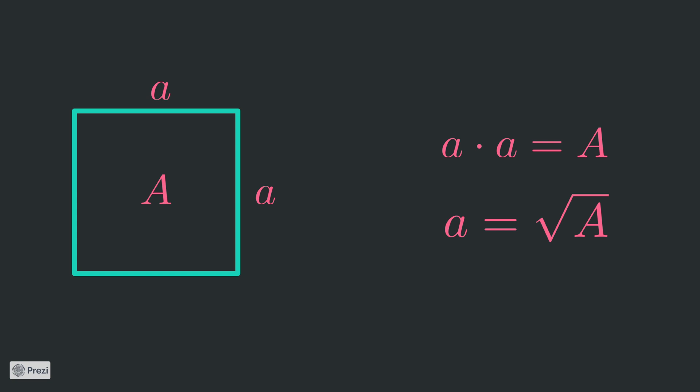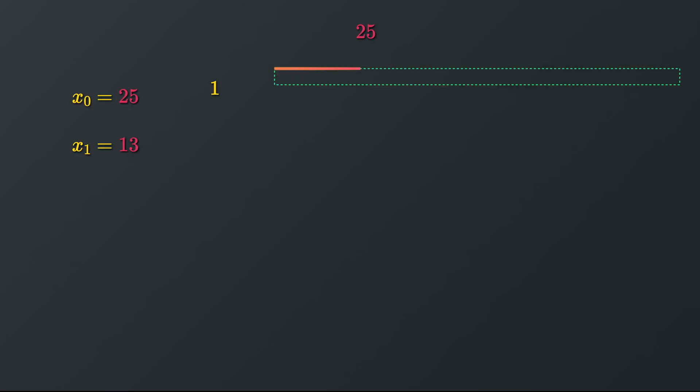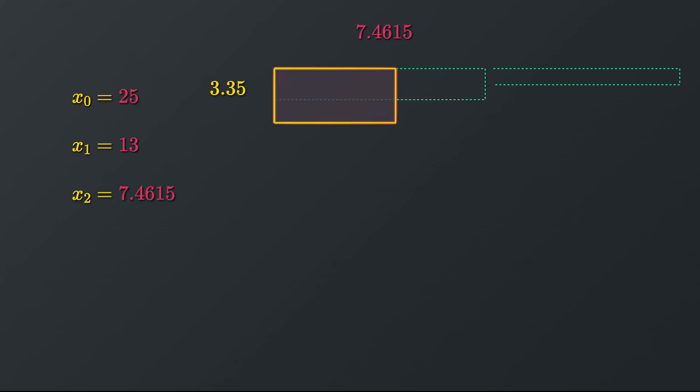Take a second to digest that. We started with a rectangle, transformed it into a square and kept the area all the time the same. Then we automatically receive the square root.